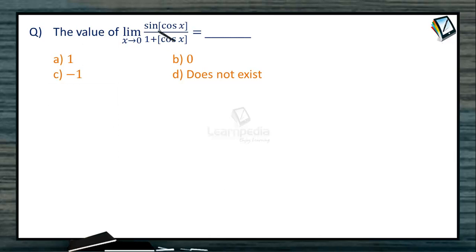Observe the function sin([cos x]) / (1 + [cos x]) where we need the limit as x tends to 0. As the greatest integer function is involved, let's evaluate the left hand limit and right hand limit of this function.